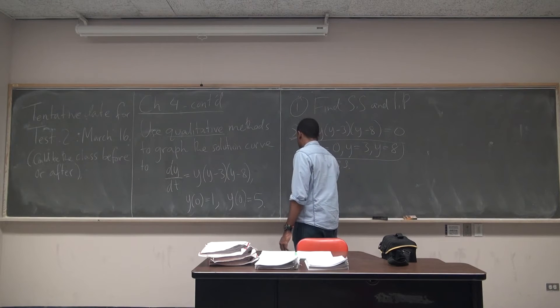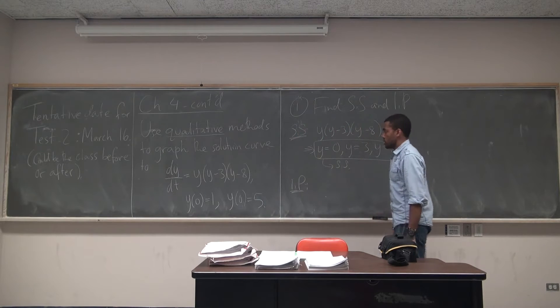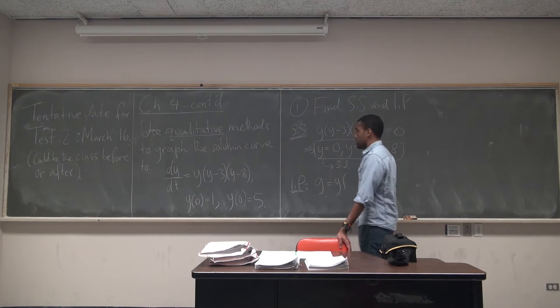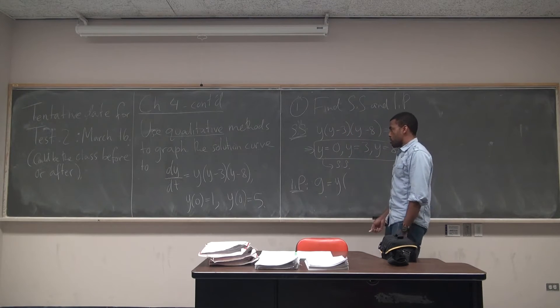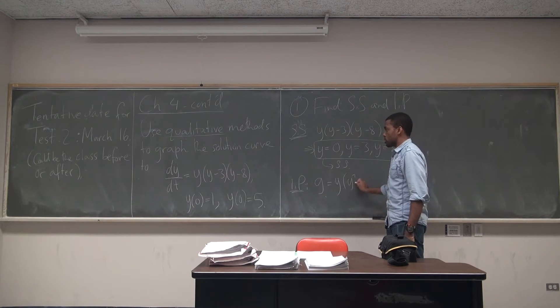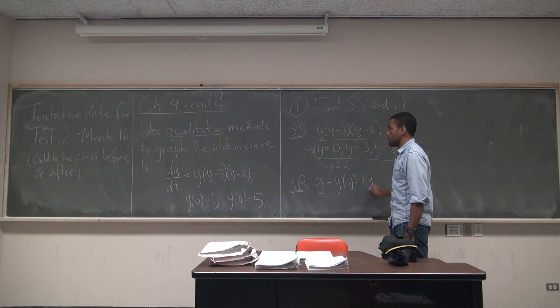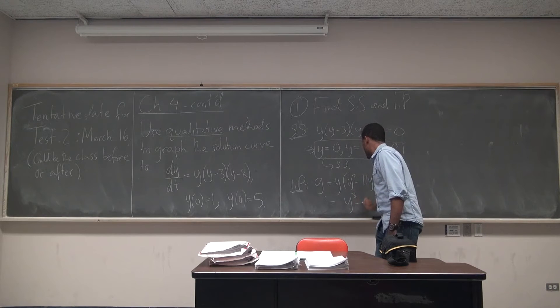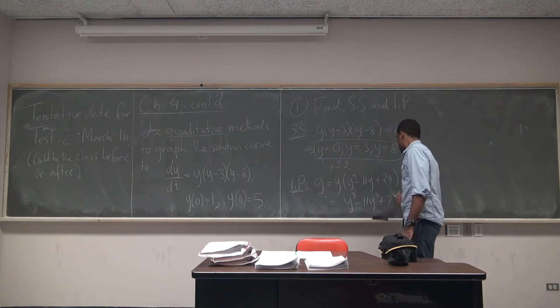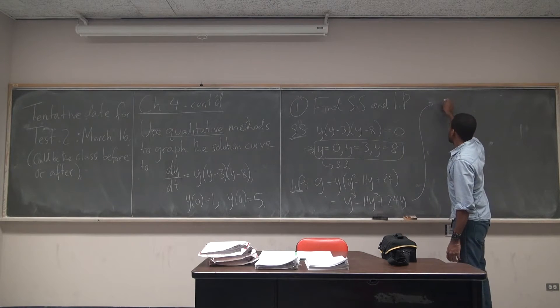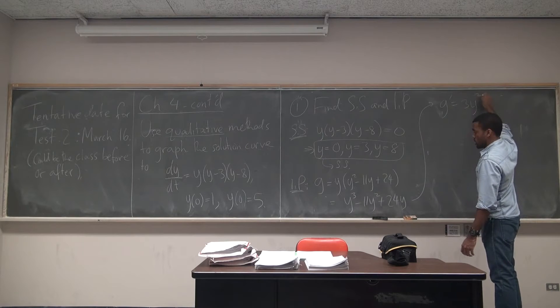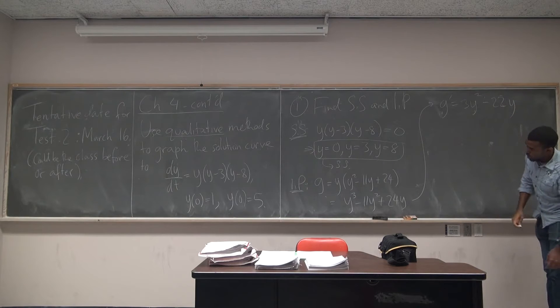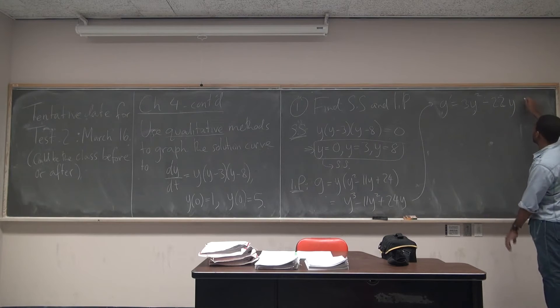And what about inflection points? How do we find those? The second derivative. So you find the derivative of that type. So we can know that G is equal to Y. You can do a triple product rule, but I'd probably multiply out. So I multiply on the second pair of brackets. I get Y squared minus 11Y plus 24. And so that gives me Y cubed minus 11Y squared plus 24Y. Which means that G prime is equal to 3Y squared minus 22Y plus 24.